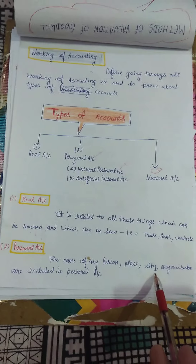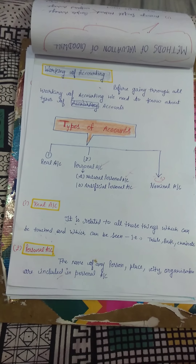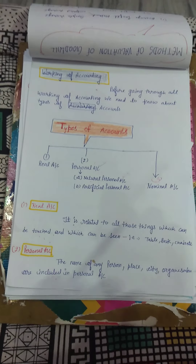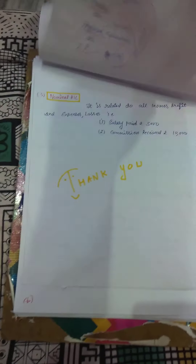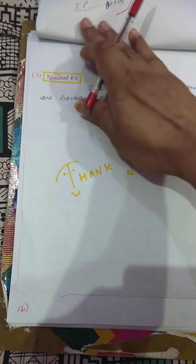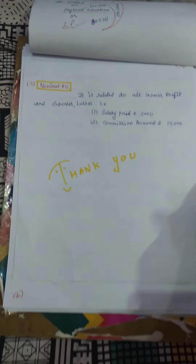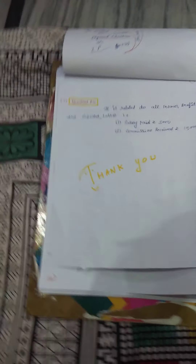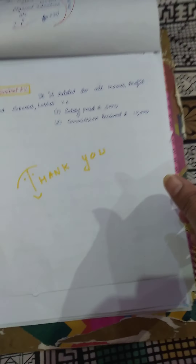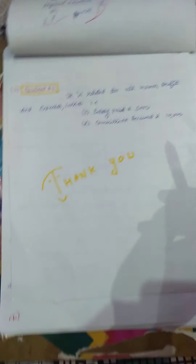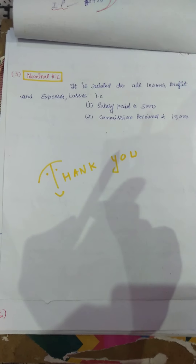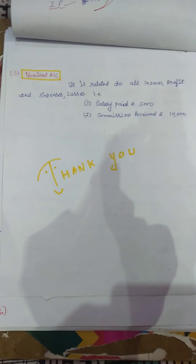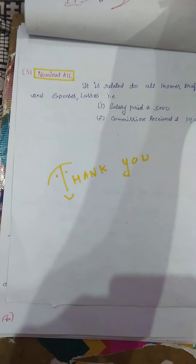What is a real account? It is related to all those things which can be touched and which can be seen — like a table, book, or chair. Everything which can be seen and touched, but the things must be non-living — all non-living tangible things fall under real account.